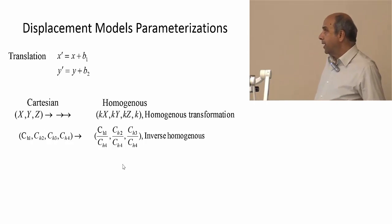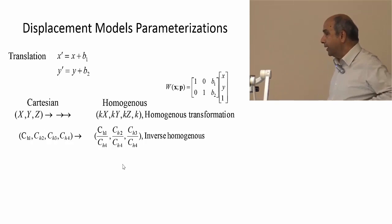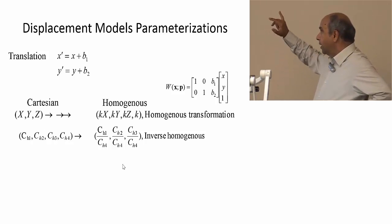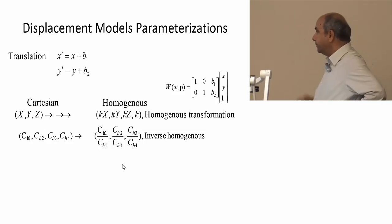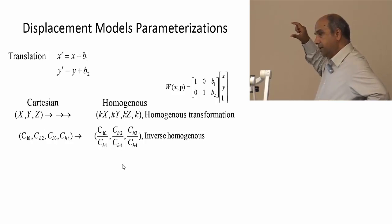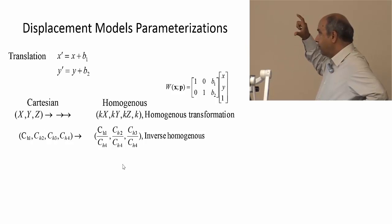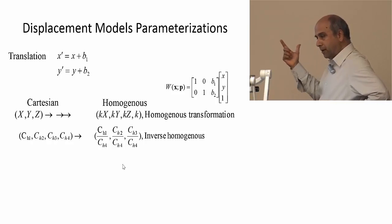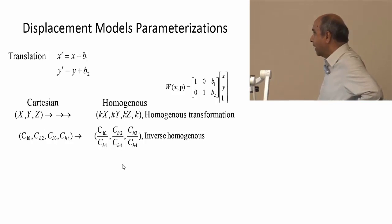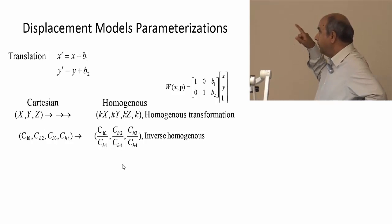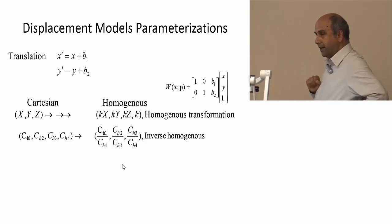In homogeneous coordinates, translation can be written as a single matrix multiplication. We represent the point as (X, Y, 1) — a 3-vector with K=1 — and multiply by a 3x3 matrix. The real translation is (b1, b2). Multiplying (X, Y, 1) by the matrix gives (X + b1, Y + b2), which is the translation. This is very convenient for composing transformations.